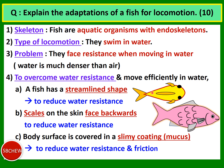This streamlined shape is a special shape that reduces water resistance — even birds have this streamlined body shape. Humans have copied this shape in many inventions: aeroplanes, ships, boats, submarines, and torpedoes all have a streamlined shape, because this shape is more suitable to reduce water resistance.